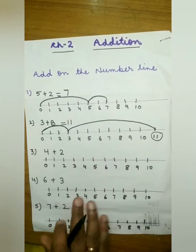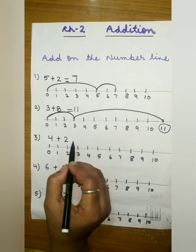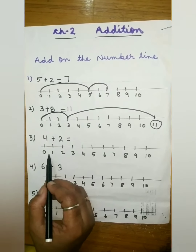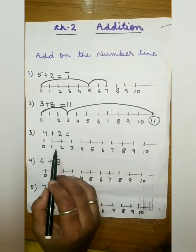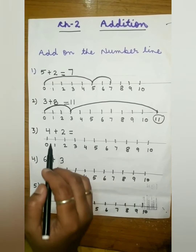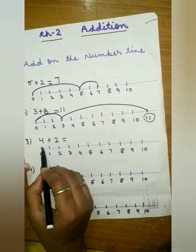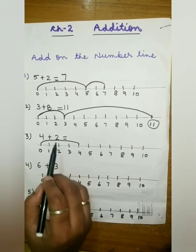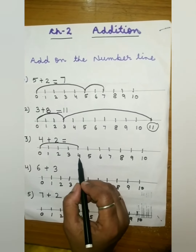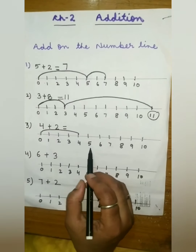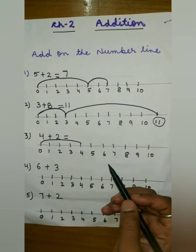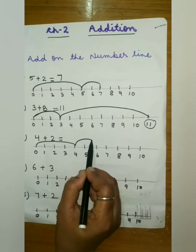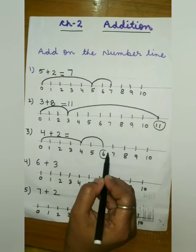Write the answer here — eleven. The next example is 4 plus 2. From zero, count four numbers: one, two, three, four — jump from zero to four. Now the next number is two, so from four count two more numbers: one, two — that means six. Jump from four to six, so the answer is six. Write down six here.